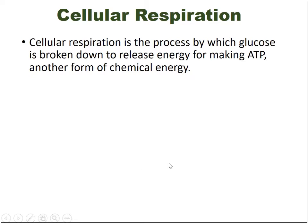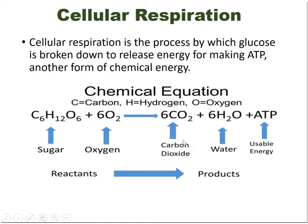Cellular respiration is the process by which glucose is broken down to release energy for making ATP — another form of chemical energy. ATP is also called the biological currency; its full form is adenosine triphosphate. The chemical reaction shows that one molecule of glucose (C6H12O6) reacts with six molecules of oxygen to produce six molecules of carbon dioxide, six molecules of water, and ATP.